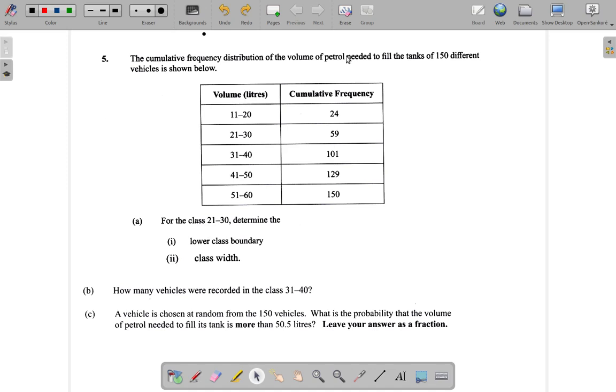Well, it would be 20.5. If you had 20.49, you would round it down to 20. But once it touches 0.5, 20.5 or higher, you round it up to 21. So that's the lower class boundary.